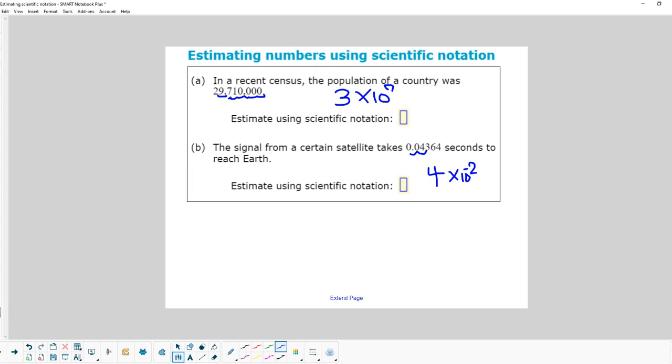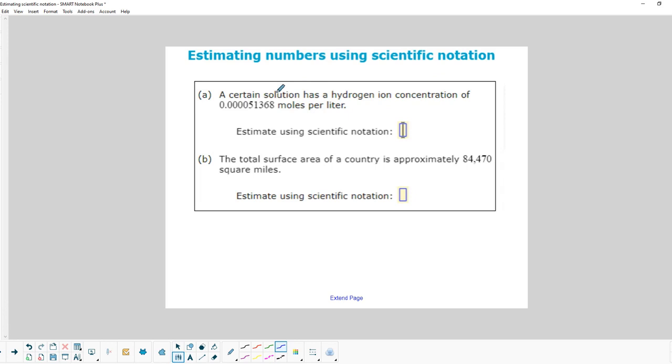A certain solution has a hydrogen ion concentration of this many moles per liter. Now that looks like a really small number, but those are the kind of numbers you're going to see in chemistry, and those amounts actually do cause things to happen in the real world. We've got to move the decimal over 1, 2, 3, 4, 5 places. So on our answer, we're going to have times 10. And since we moved the decimal to the right to get it into scientific notation, we'll have a negative 5. Then we've got the 5 right here, and the digit behind it is 1, so the 5 is just going to stay a 5 rather than rounding up to a 6.